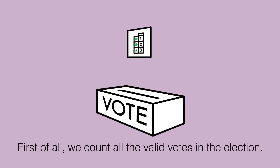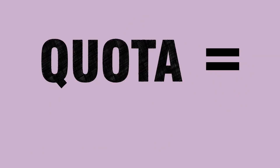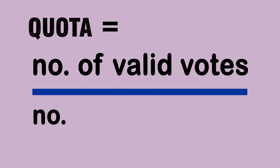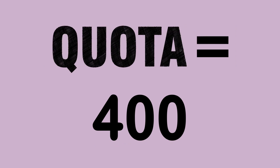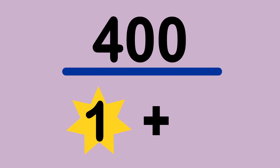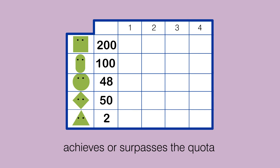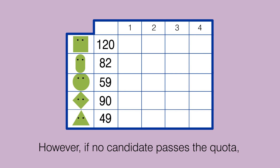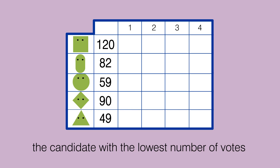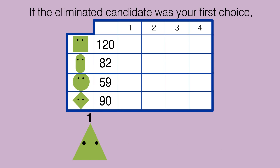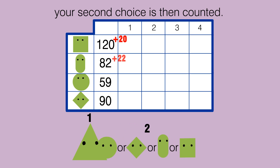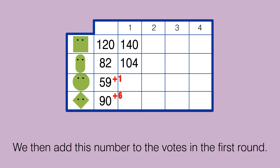How is this election counted? First of all we count all the valid votes in the election. We then work out the quota — the number of valid votes divided by the number of positions available plus one. For example, if you have one position and 400 valid votes, the quota is 400 divided by 1 plus 1, and therefore the quota is 200. We then count all the number one votes for each candidate. If the candidate with the highest number of votes achieves or surpasses the quota, they win. However, if no candidate passes the quota, the candidate with the lowest number of votes is eliminated. If the eliminated candidate was your first choice, your second choice is then counted. We then add this number to the votes in the first round.